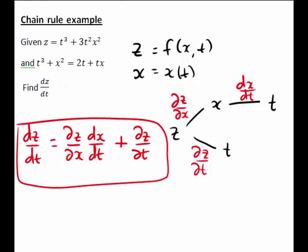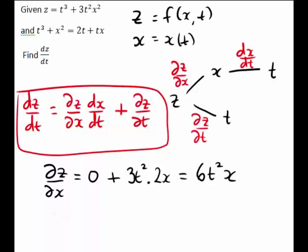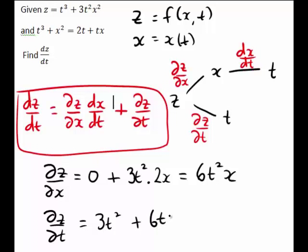Let's start by working out our partial derivatives of z. For the partial derivative of z with respect to x, treating t as a constant, t cubed becomes 0, and the next term 3t squared x squared becomes 3t squared times 2x, which simplifies to give ∂z/∂x equals 6t squared x. Similarly, to find ∂z/∂t we treat x as a constant, giving 3t squared for the first term plus 6t x squared.